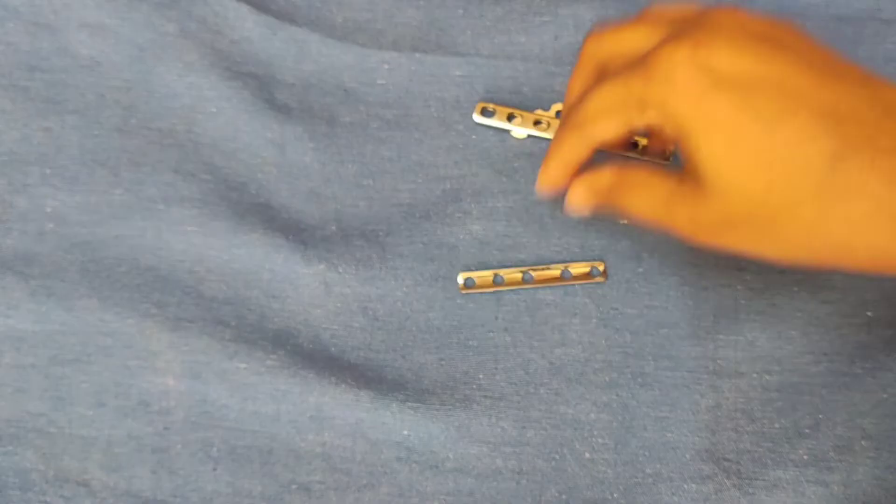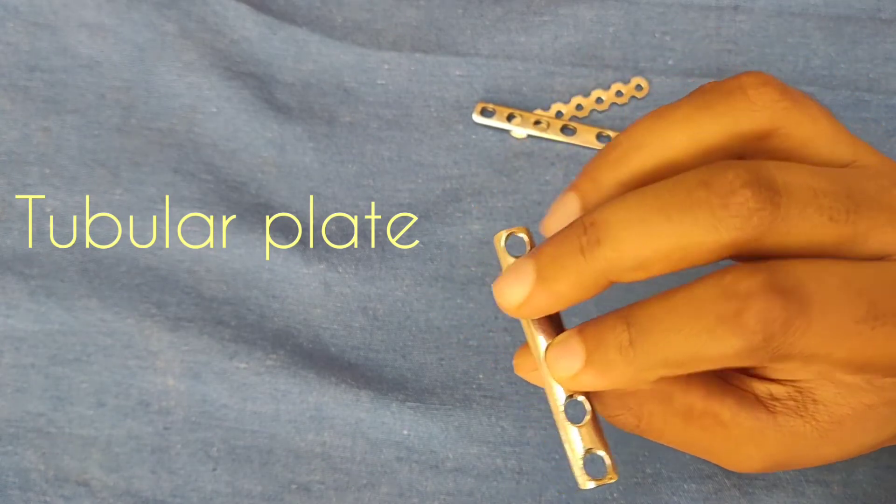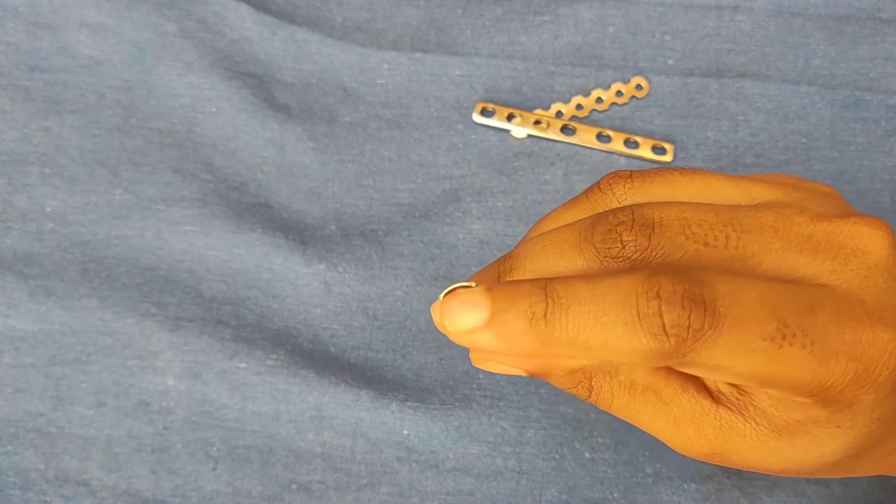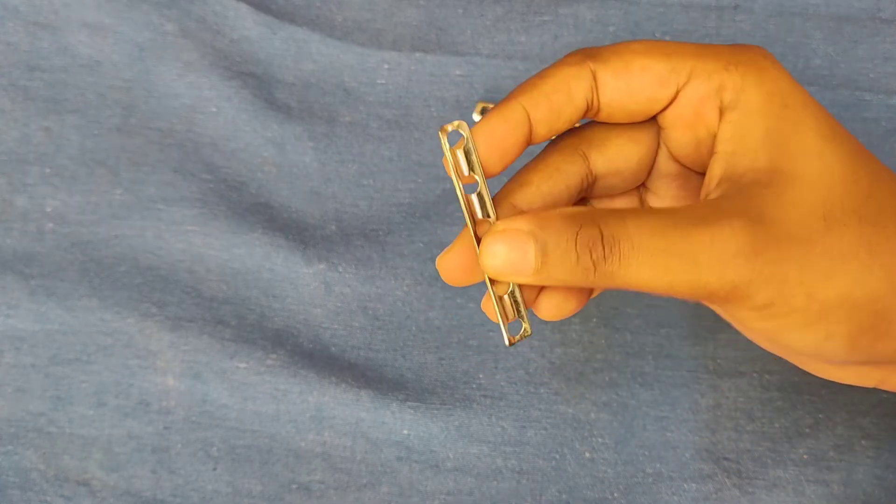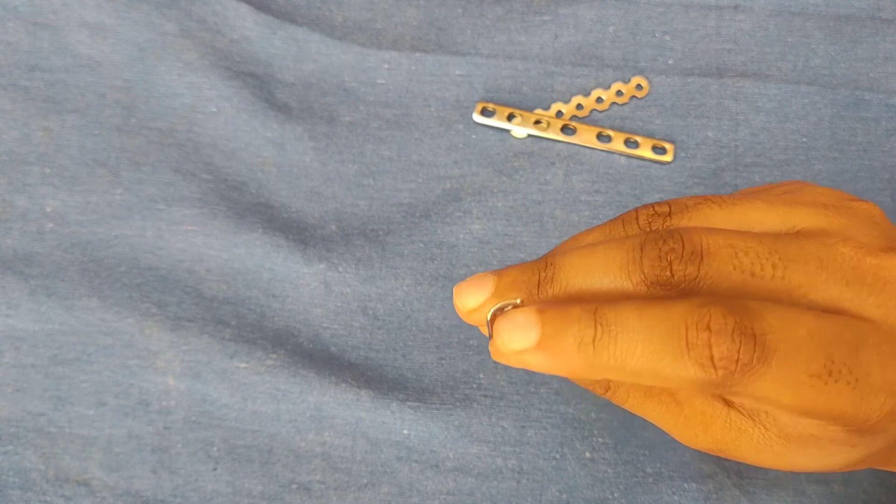Next is tubular plates. Tubular plates are actually part of a metallic cylindrical tube. It is mainly used in bridging and neutralization mode of plating. There are quarter tubular, one third tubular and semi tubular plates available.